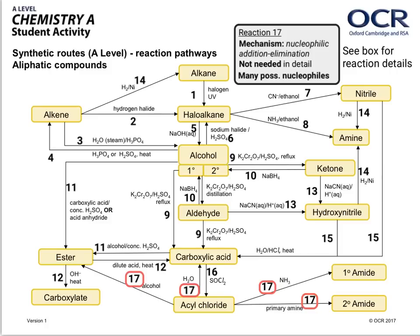In the final reaction, number 17, you'll see there are lots of different examples. They all undergo the same mechanism called nucleophilic addition-elimination, which you don't need to know in detail — such as curly arrows, lone pairs, and dipoles. But there are many possible nucleophiles that can undergo this reaction with acyl chloride, and it's important to be aware of those nucleophiles. They are nucleophiles because there'll be an atom in each species that possesses a lone pair allowing it to undergo a dative covalent bond. Now let's move on to aromatic compounds.